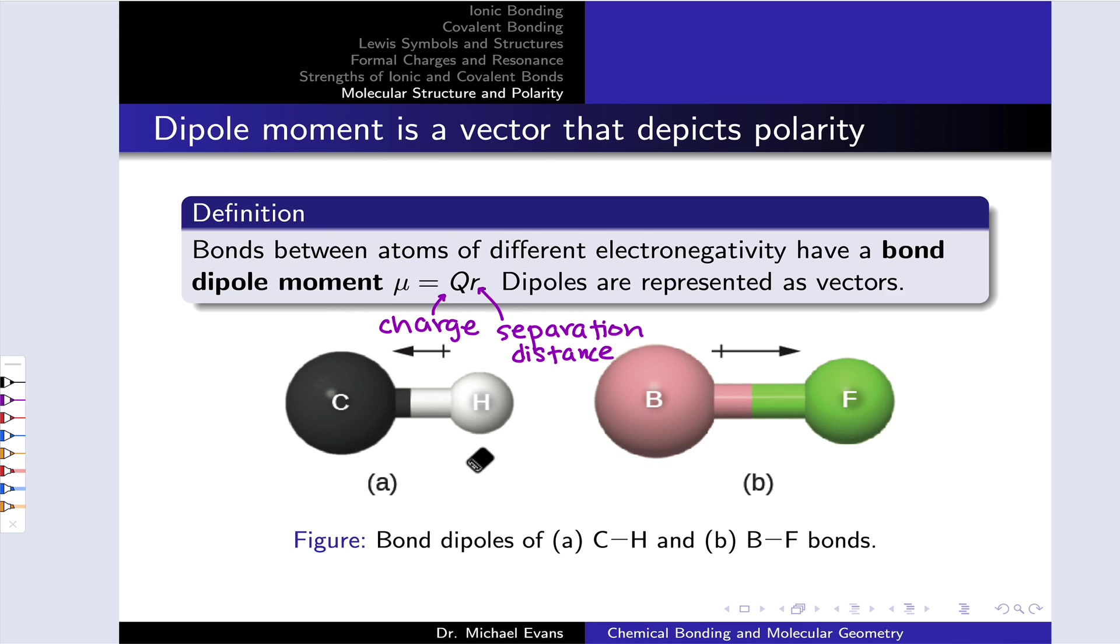More often than not, we represent the dipole as a vector pointing from the positive side, the positively charged side, to the negatively charged side of the dipole. And a bond dipole points along the axis that connects the nuclei involved in the bond, the internuclear axis. So notice that these dipole vectors are parallel to the bonding axes of C-H and B-F here.